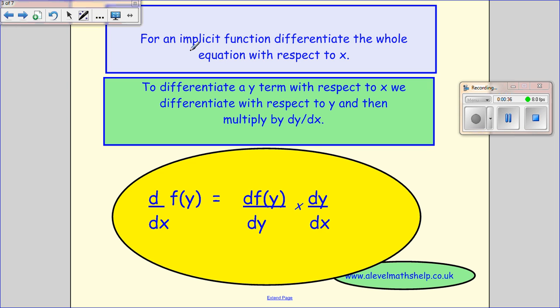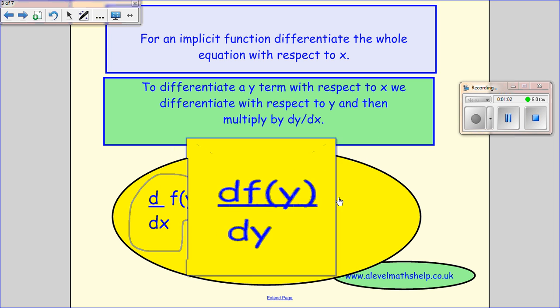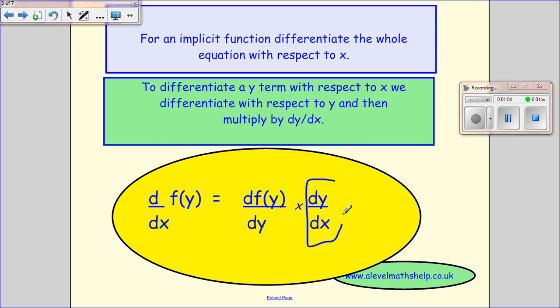So to differentiate an implicit function, we differentiate the whole equation with respect to x and when we come across a y term, which we want to differentiate with respect to x, we actually differentiate with respect to y and multiply by dy by dx. So what does that mean? We want to differentiate our y term with respect to x. To do this, we differentiate with respect to y and then we multiply by dy by dx.